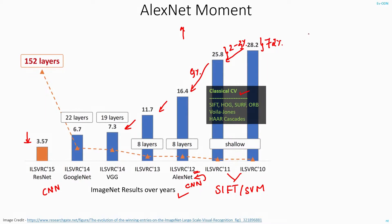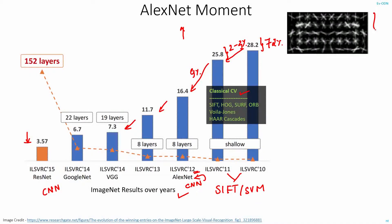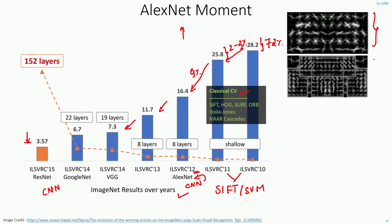If you take the Dalal-Triggs detector for example, it had just one layer — you take the image, extract the HOG features, and you are done. The DPM has two layers. But if you compare that with the modern ResNet architecture, it has 152 layers. Since the model runs so deep with many layers, it's called a deep neural network, hence the name deep learning.